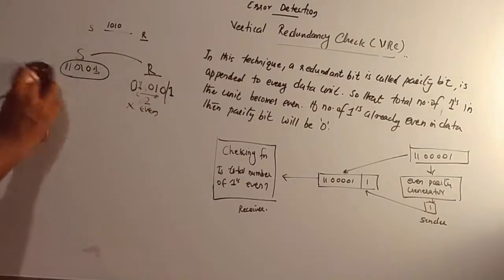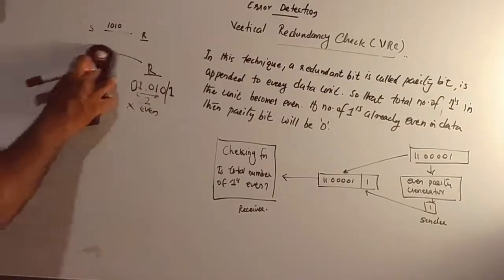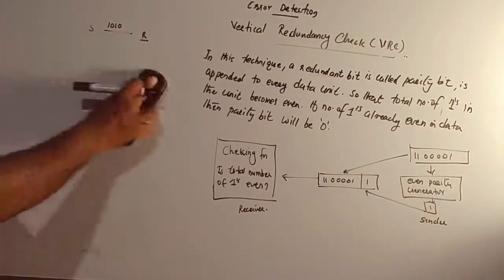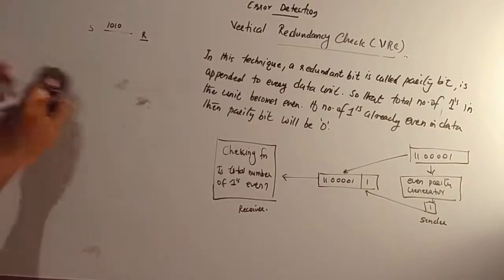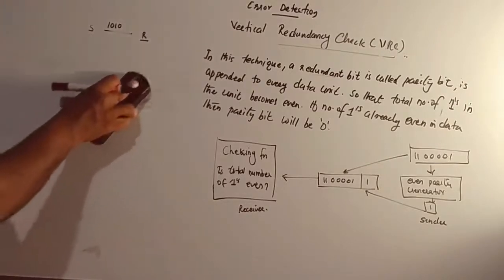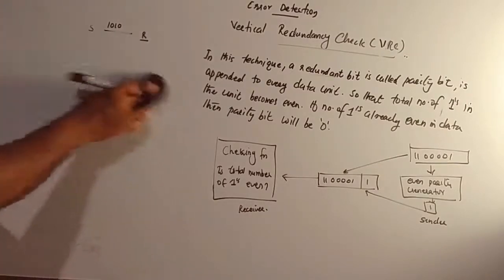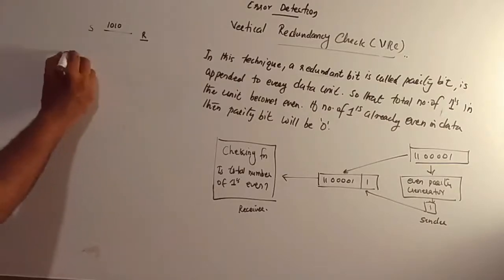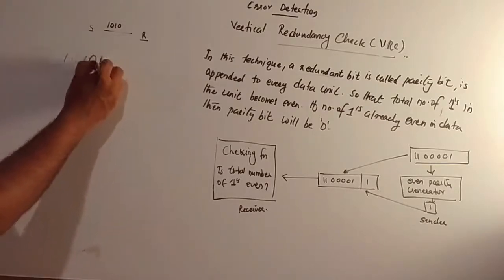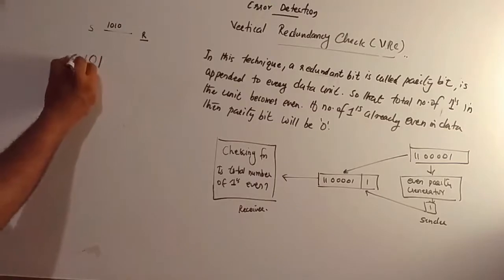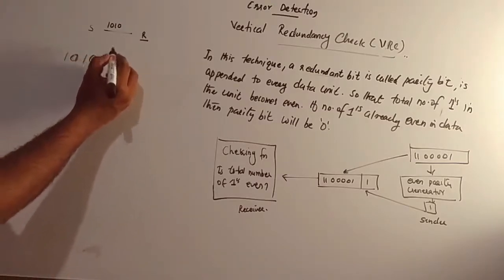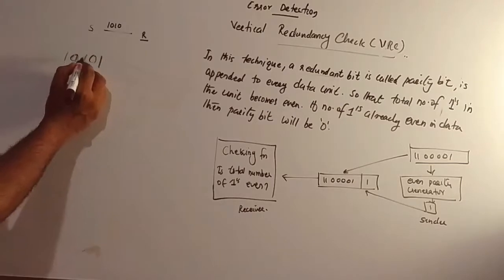For example, here we can detect a single bit error, so that it will be found. A single bit error can be detected. For example, the message 1010101 is sent.